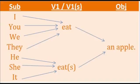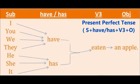The second tense in this present tense is present perfect tense. The structure for this tense is subject plus have or has plus V3 plus object.